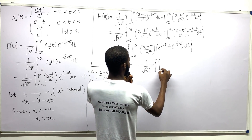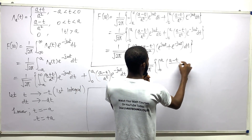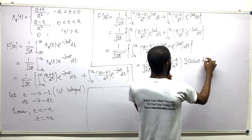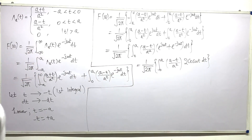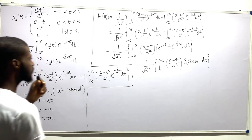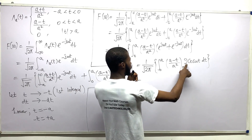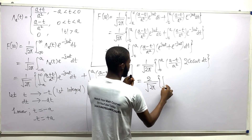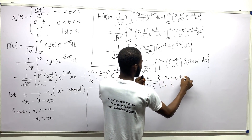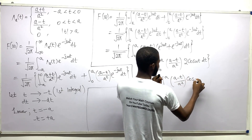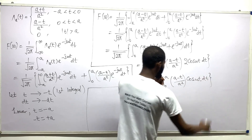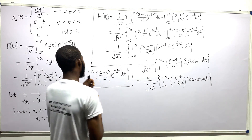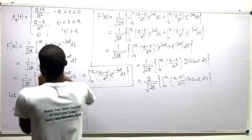The factor of 2 is a constant and can be brought out, giving (2/√(2π)) times the integral from zero to a of (a − t)/a squared times cos(ωt) dt. Now we will use integration by parts.